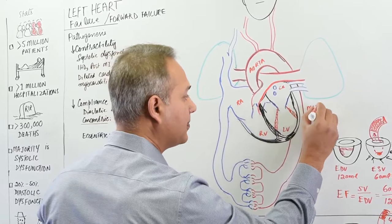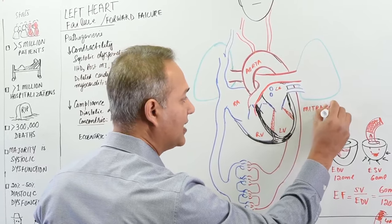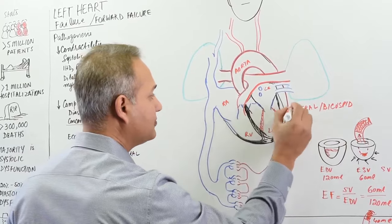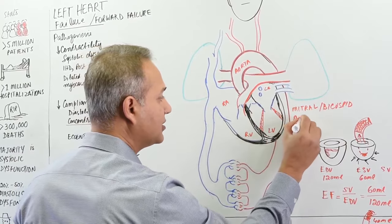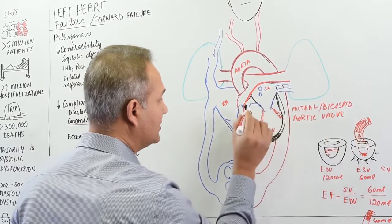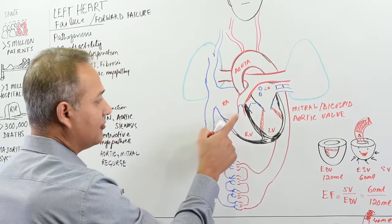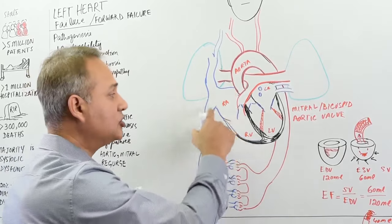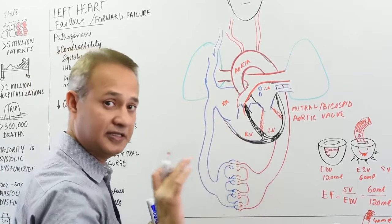Mitral or bicuspid valve. This is aortic valve. Write it here. Aortic valve is here. Then on the right side, of course, pulmonary valve and the tricuspid valve. But we are not interested on the right side of the heart at this time.